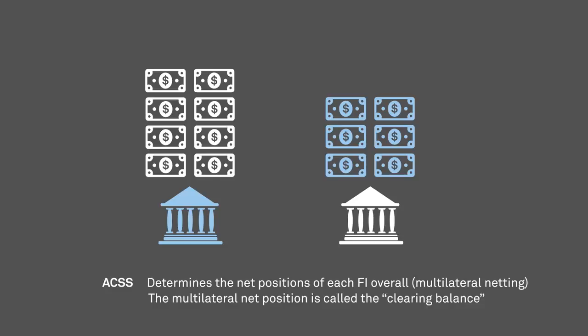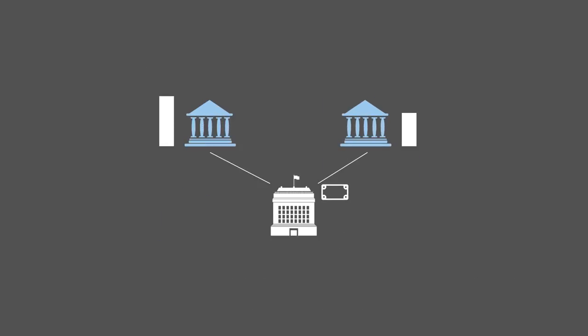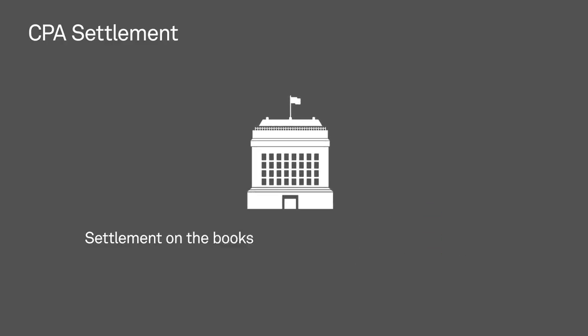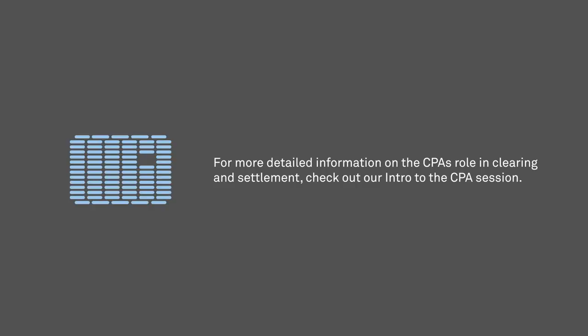Settlement at the Bank of Canada is the next and final step in the clearing and settlement process. It takes place following the end of an ACSS cycle around 11 a.m. each business day. Direct clearers that have a negative ACSS clearing balance are required to send payments for that amount to the Bank of Canada using the CPA's Large Value Transfer System, or LVTS. When the Bank of Canada receives a settlement payment from a direct clearer, it updates that direct clearer's ACSS settlement account records. Direct clearers with a positive ACSS clearing balance can choose to maintain a positive balance or reduce it by receiving an offsetting LVTS payment from the Bank of Canada. Settlement on the books of the Bank of Canada is final, or irrevocable. Indirect clearers settle with their respective clearing agents through accounts they maintain with them. For more detailed information on the CPA's role in clearing and settlement, check out our Intro to the CPA session.